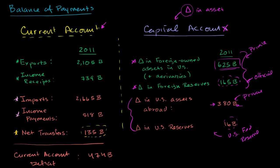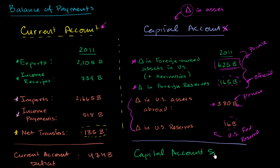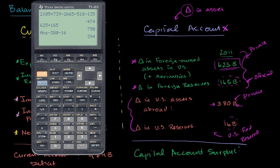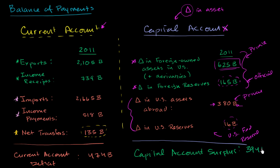So we end up with a capital account surplus of 394 billion. And you can see that these numbers — the current account deficit and the capital account surplus — are pretty close to each other. Hopefully in future videos we'll understand why in more depth, but these numbers actually should have been the exact same thing. We see that they're off by about 80 billion.